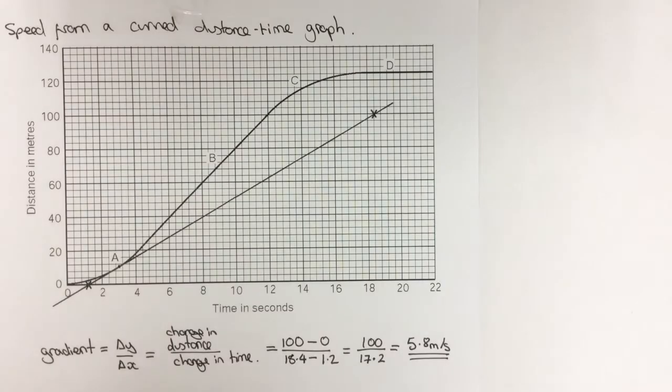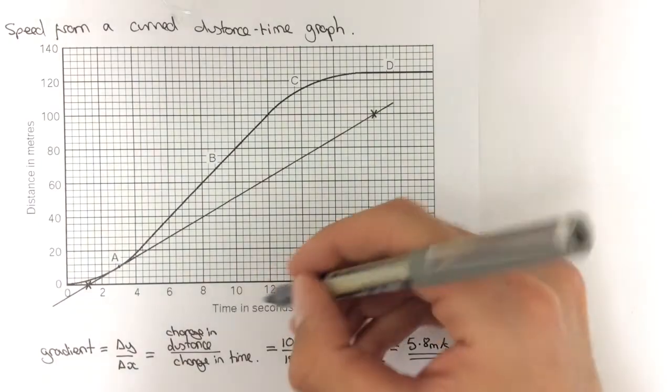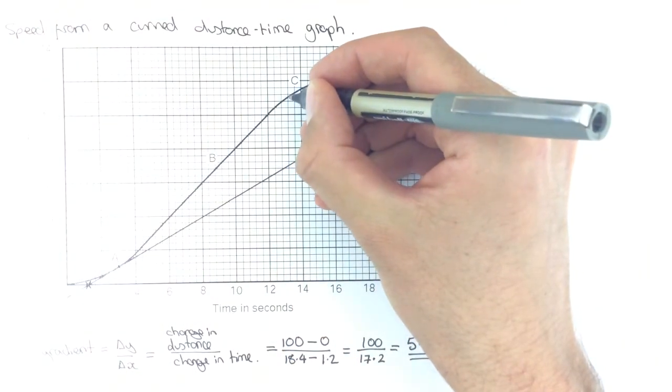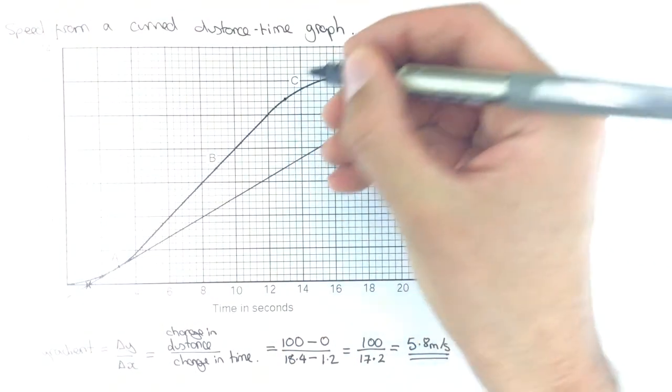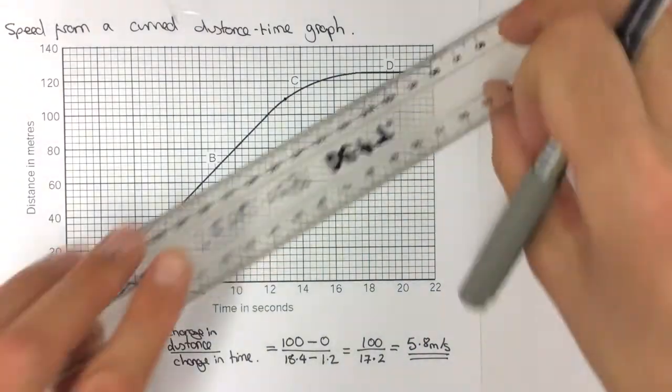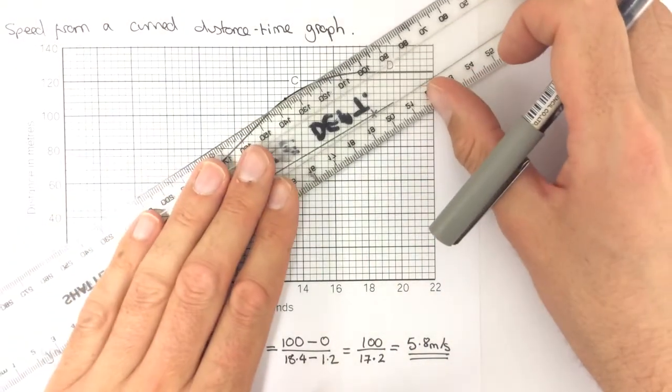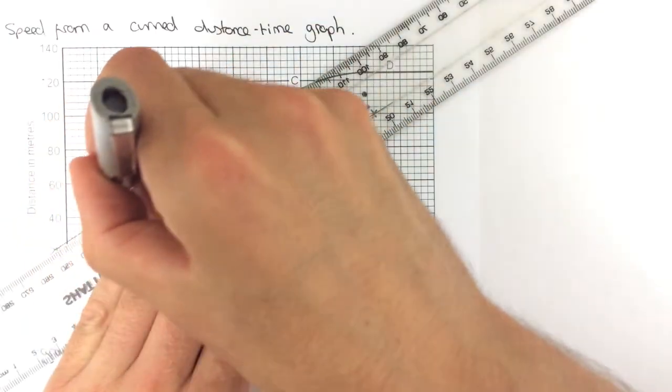So, if I wanted to find the speed at another time, say at 13 seconds, then I'd need to mark off a point at 13 seconds, and draw in another tangent at that time, and repeat the process.